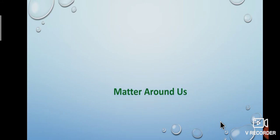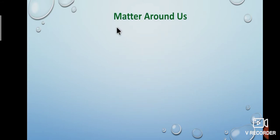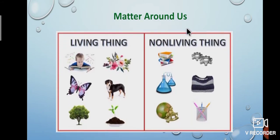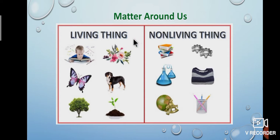Shall we see matter around us? Our world is made up of living and non-living things. See the picture. Some examples of living things are human, animal, flower, dog, butterfly, plants, trees, etc. Like that, book, tools, measuring jar, dress, globe, pencil, etc. are non-living things.